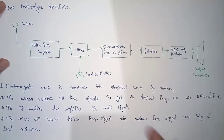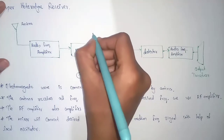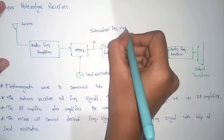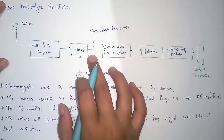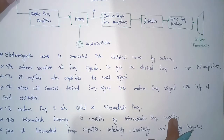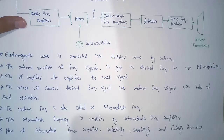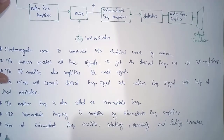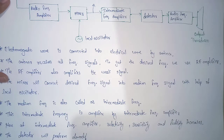When we are receiving the signal here, we are getting a medium frequency signal. This medium frequency signal is also known as the intermediate frequency signal. The intermediate frequency signal will be sent to the intermediate frequency amplifier where the signal will get amplified. At the intermediate frequency amplifier, selectivity, sensitivity, and fidelity increase. The detector will perform demodulation of the signal, and the original signal will be detected.